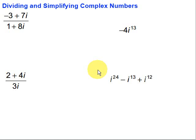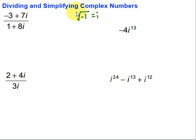In this video, we're going to take a look at dividing and simplifying complex numbers. First of all, we should remember that when we have complex numbers, a key thing is that the square root of negative 1 is equal to i. That's where we start, and we end up with all of our complex numbers — that imaginary thing — to take care of those negative square roots.